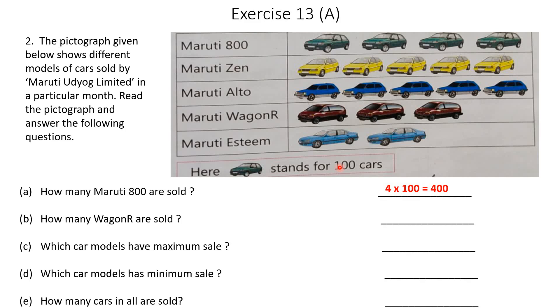Next: how many WagonRs are sold? Looking at the WagonR row, there are 3 cars shown. So 3 into 100 equals 300. There are 300 WagonRs sold.